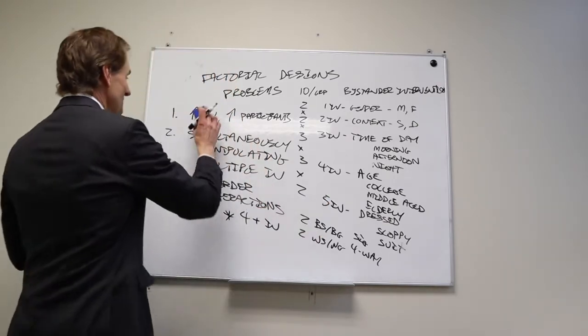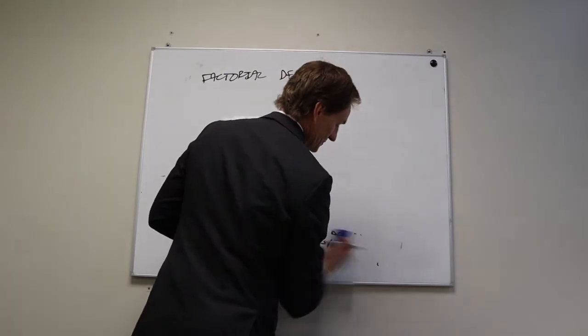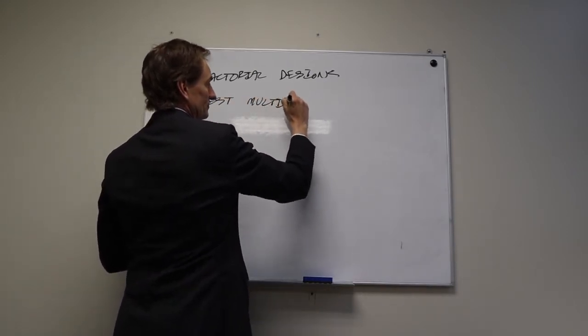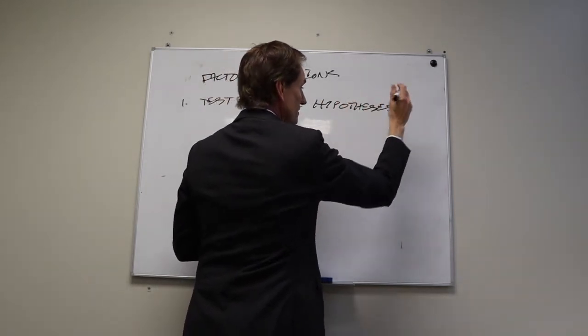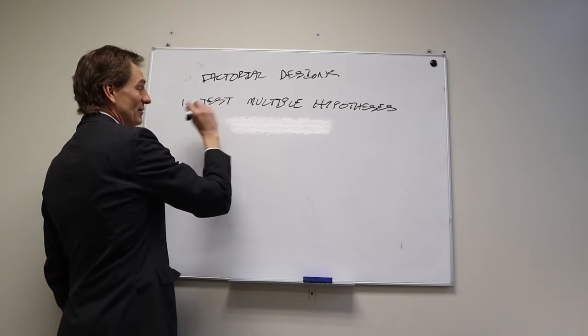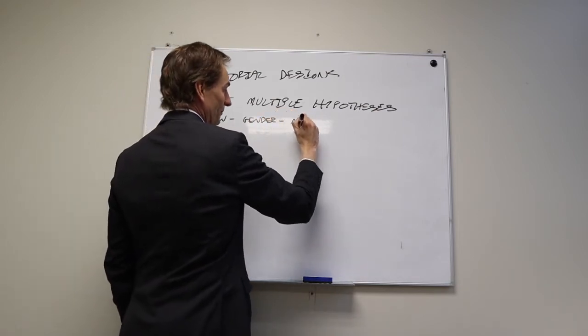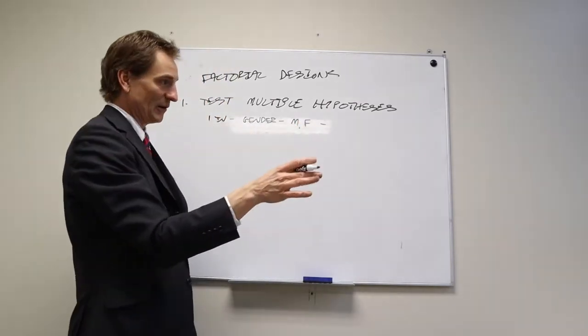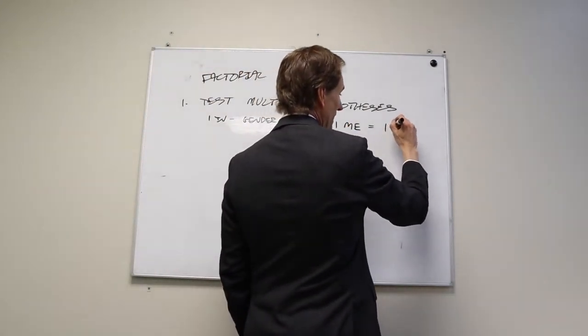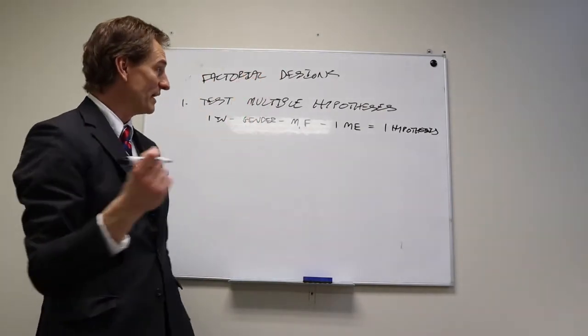I don't want to focus on the problems with factorial designs, so let's talk about the advantages. One advantage is that they let you test multiple hypotheses. For example, if we run a study with one independent variable - our bystander intervention study with gender, male and female - we can test one main effect, one hypothesis.